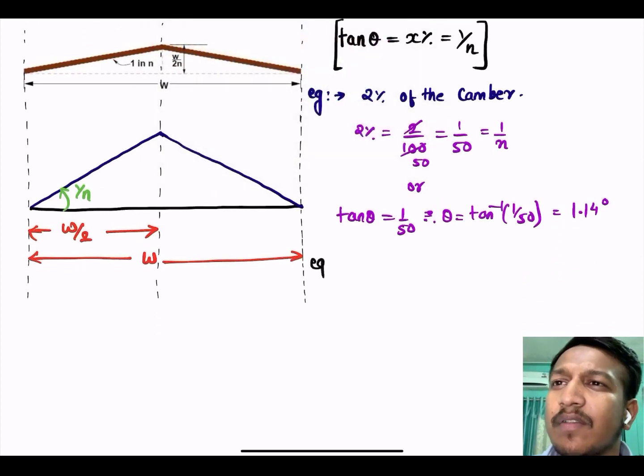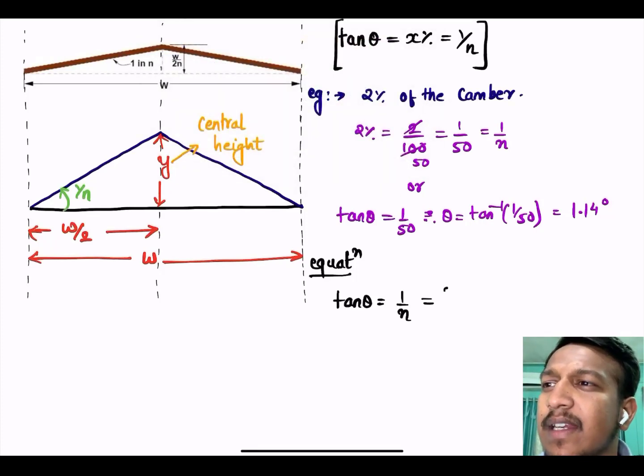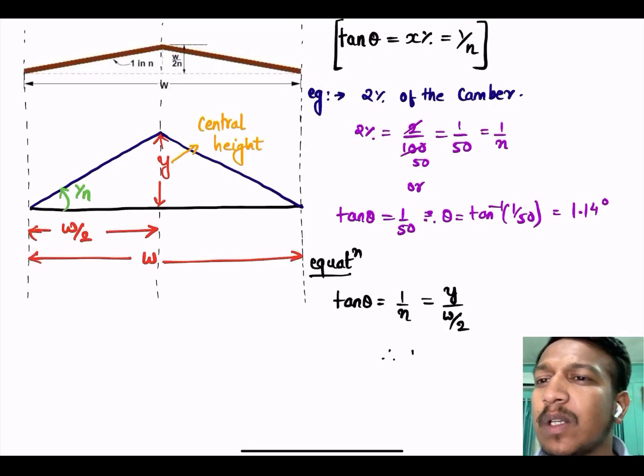Therefore θ equals tan inverse 1 by 50 which is nearly 1.14 degree. Very less, 2% of the camber resembles to 1.14 degree. For derivation, tan θ equals 1 by n equals opposite upon adjacent. Opposite is y, the central height or crown, and adjacent is w by 2. Therefore y equals w divided by 2n.